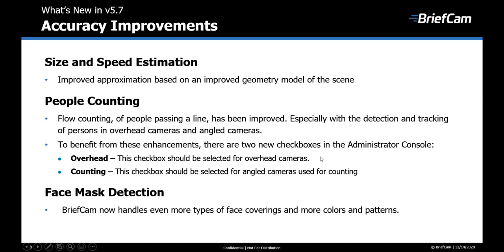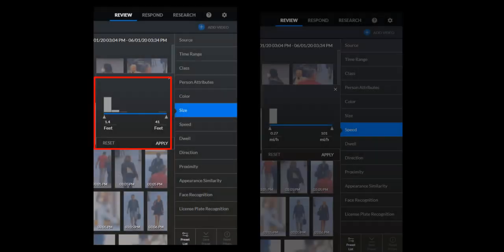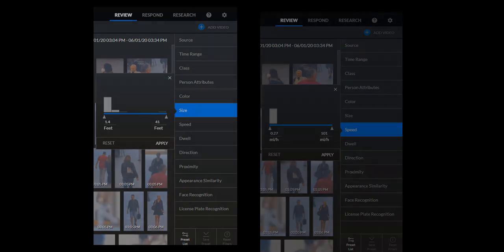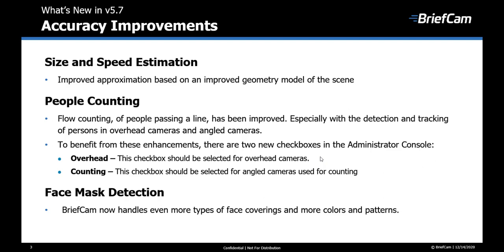In our constant endeavor to improve the accuracy of BriefChem, we invested a lot of time and resources this version on improving accuracies. We improved the size and speed estimations by using an improved geometry model of the scene. In addition, flow counting of people passing a line has been improved.